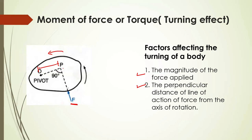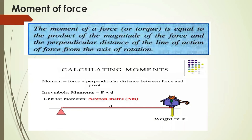To get the maximum turning effect, I need to either apply more force or increase the perpendicular distance — or increase both. Now, how do we calculate the moment of force? The two important factors are force and perpendicular distance. Taking the product of them gives the moment of force. Mathematically, moment of force equals force multiplied by the perpendicular distance between the point of force application and the pivoted point. So the formula is: Moment = F × d, where F is force and d is the perpendicular distance.